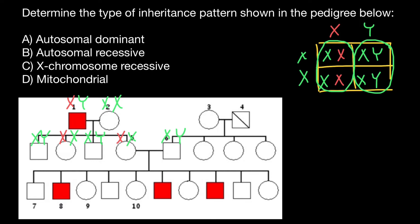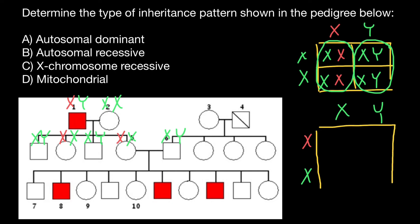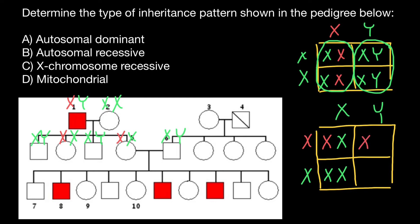So let's build another Punnett square. The genotype of the male is normal X, normal Y, and the genotype of the female is defective X and normal X chromosome. Again, we build a simple Punnett square, two by two, and look at the distribution of genotypes and phenotypes among their children: defective X chromosome inherited from the mother's side with normal X from the father's side; normal X from the mother's and father's side; defective X from the mother's side with normal Y from the father's side; and normal X from the mother's side with normal Y from the father's side.